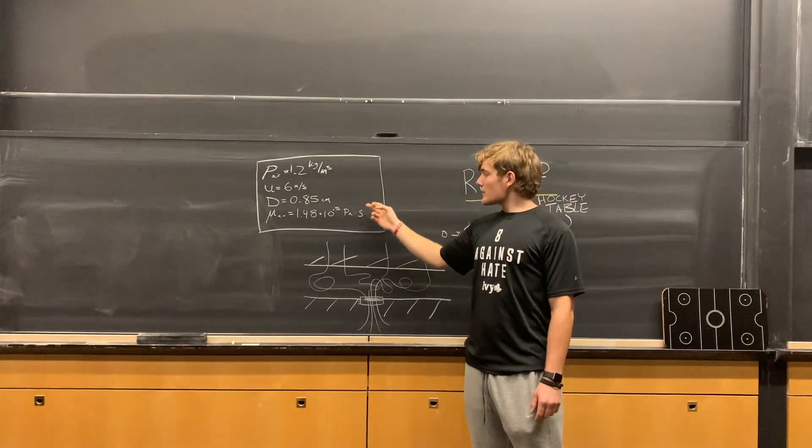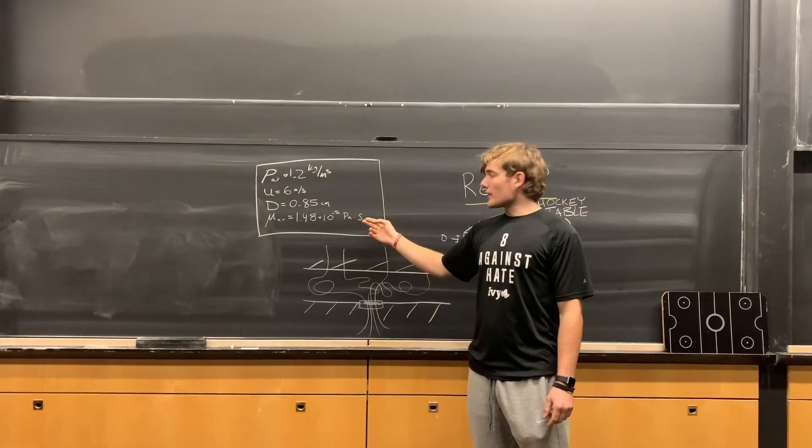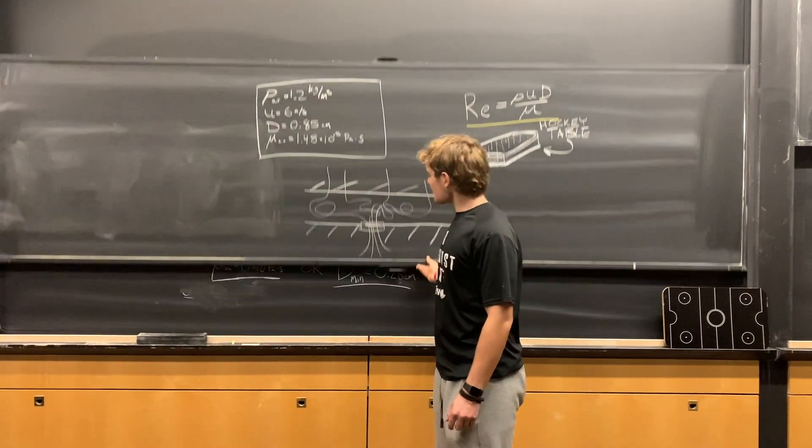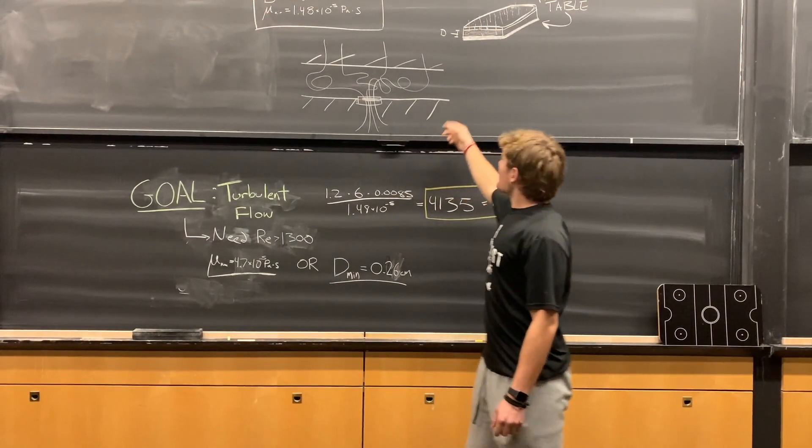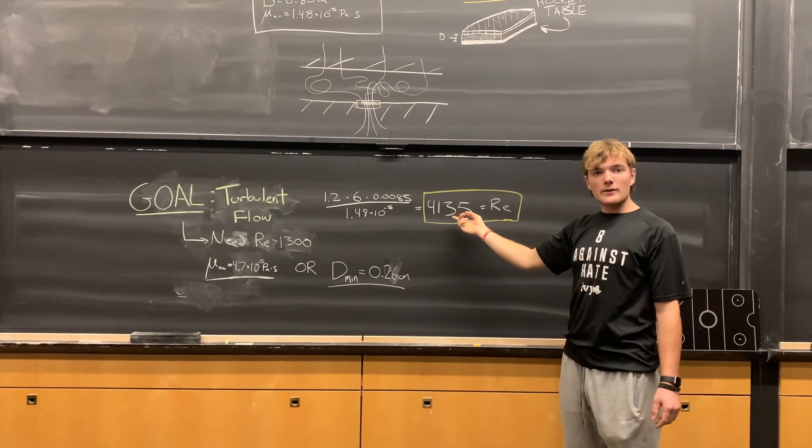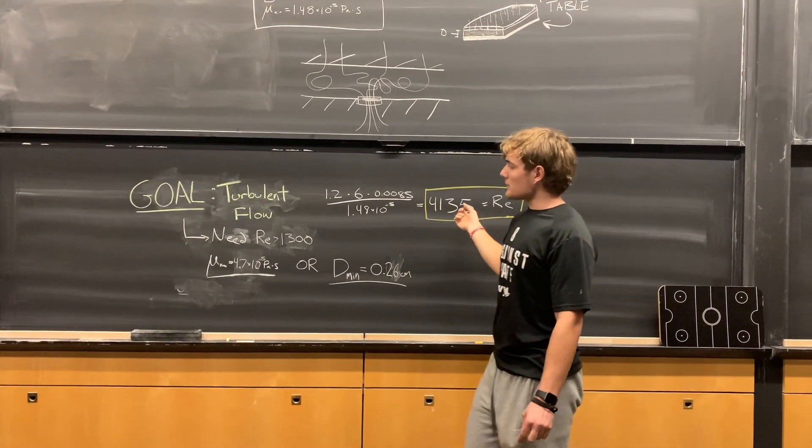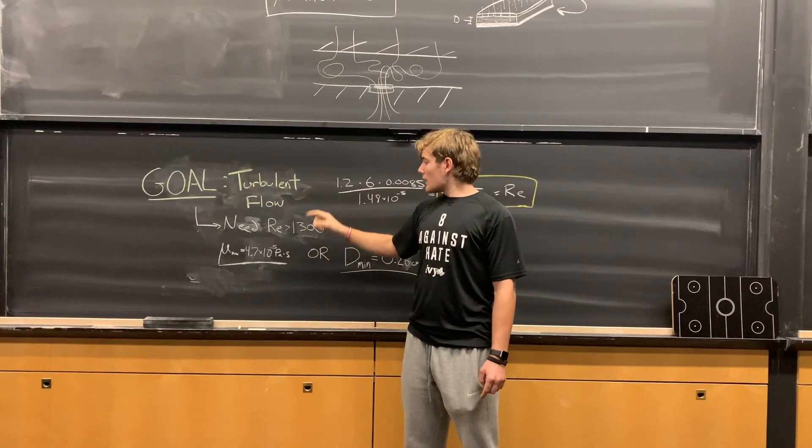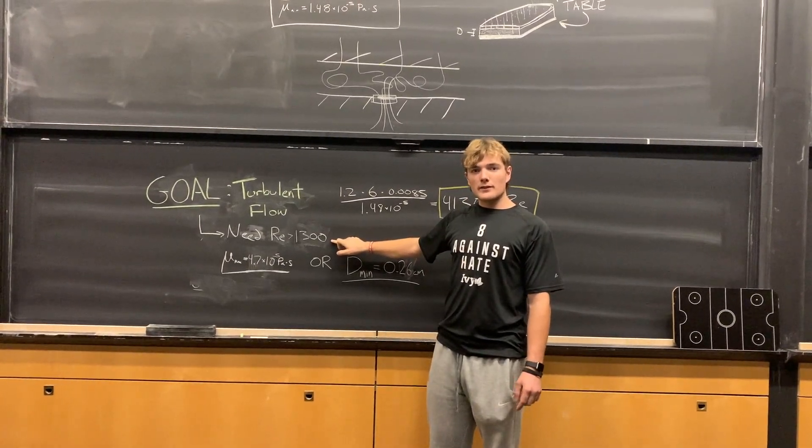The viscosity of air is 1.48 times 10 to the negative fifth pascal seconds. So calculating the Reynolds number, we find it to be about 4,000, which means it's in turbulent flow. So our goal for the air hockey table to work is to have turbulent flow. This means the Reynolds number has to be over 1,300.